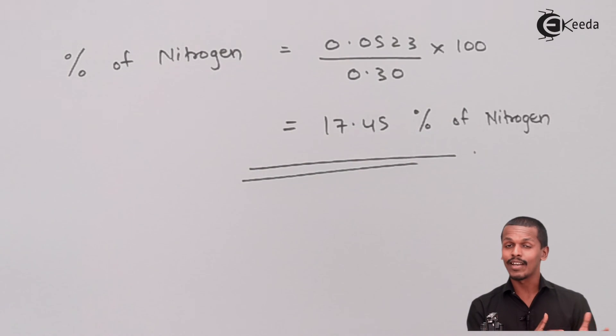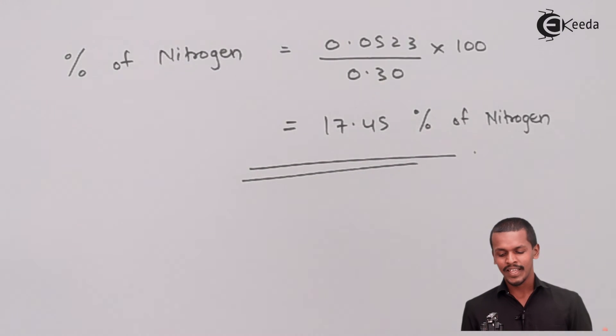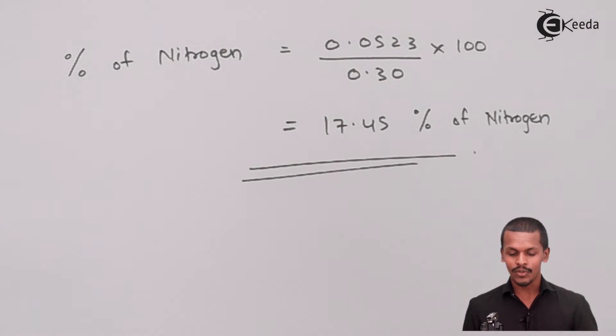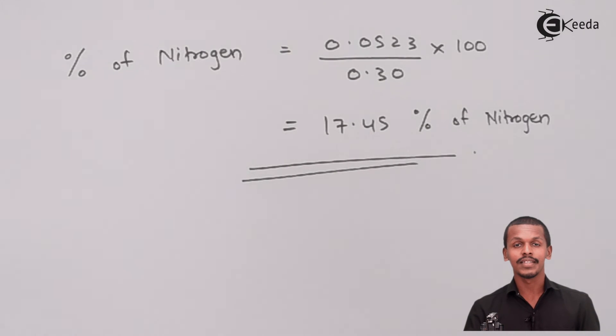In any organic compound we can find the percentage of nitrogen using Dumas method. Thank you friends for watching this video. I hope you liked it and understood the Dumas method. Share this video with your friends and don't forget to subscribe to the IGEDA channel. Thank you so much.